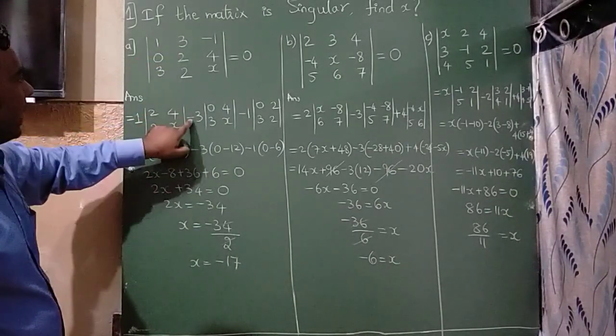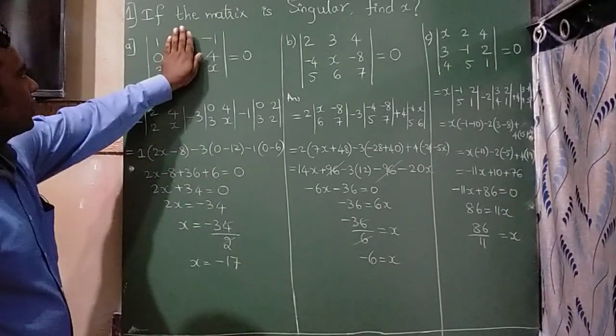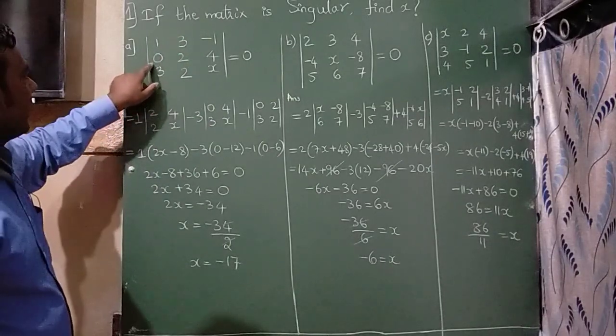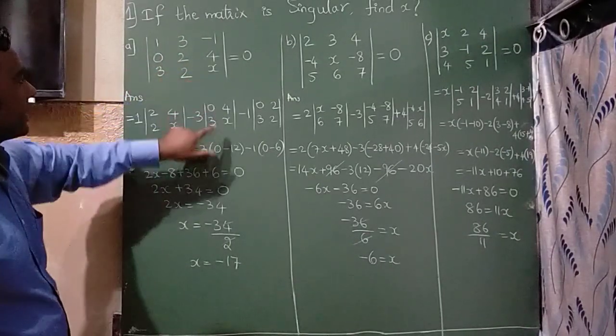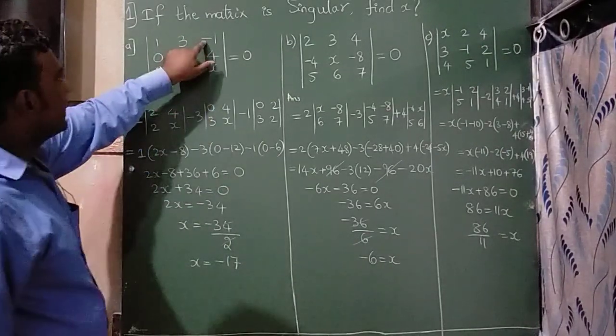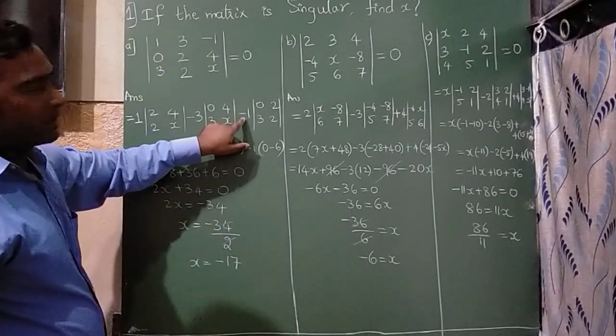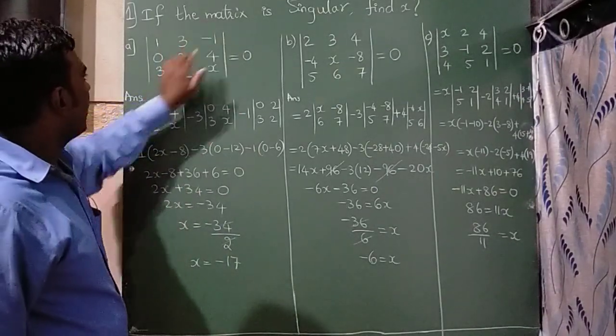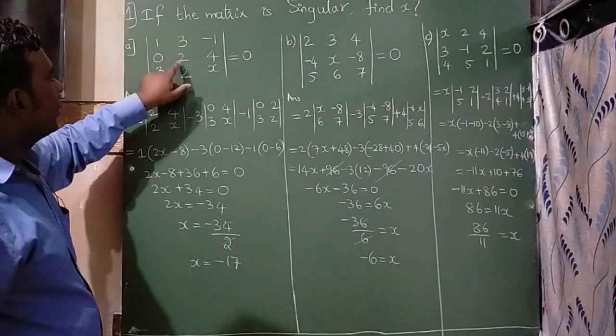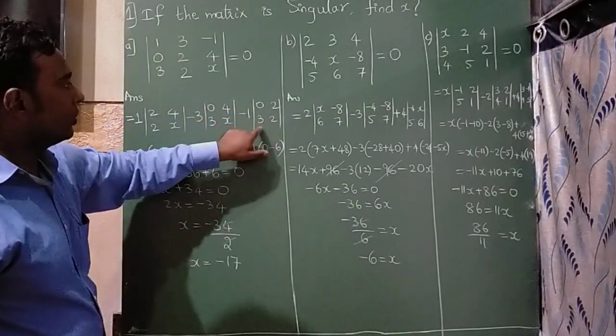Here, the second one I have taken minus 3. If I close this column, then you can write 0, 4, 3, x I have written here. Since there is a minus, so I have written minus. Now, if I close this column, I can write 0, 2, 3, 2.